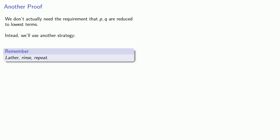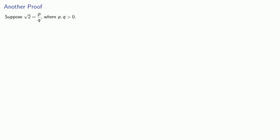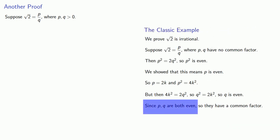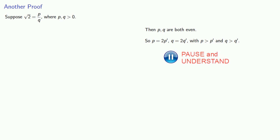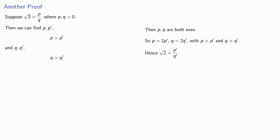It turns out we don't actually need the requirement that p and q are reduced to lowest terms. Instead, we'll use another strategy — lather, rinse, repeat. We'll start with the same assumption: square root of 2 equals p divided by q, where p and q are positive integers. Picking up from the point where we show both p and q are even, that means p is 2 times something and q is 2 times something, where p is greater than p-prime and q is greater than q-prime. Removing that common factor, we get square root of 2 equals p-prime divided by q-prime.